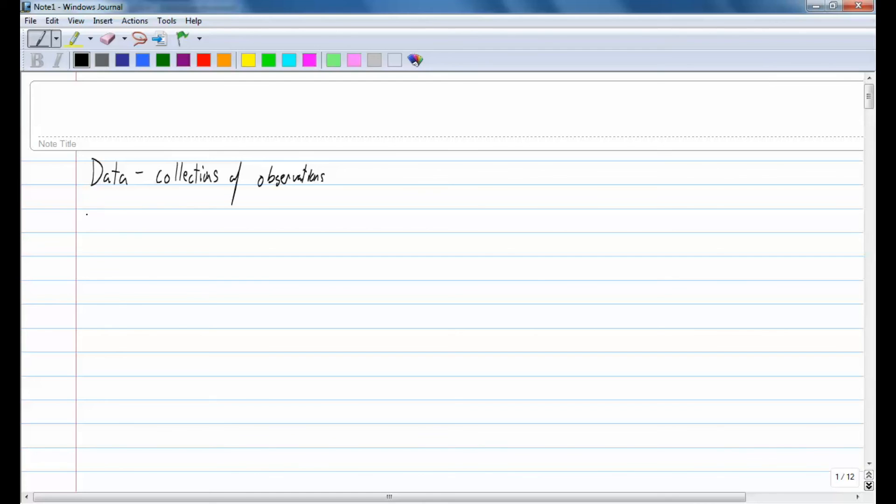Statistics. What is statistics? Statistics is the science of planning studies and experiments, obtaining data, and then organizing, summarizing, presenting, analyzing, interpreting, and drawing conclusions based on the data.